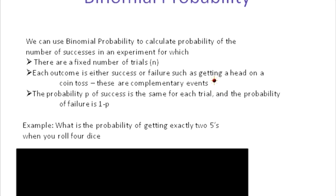My n is four — those are four trials. The probability of getting a five on one die is one sixth. So in this experiment I'm going to roll four dice, doing four trials. I'm going to say success is when I get a five and the probability of success is one over six.